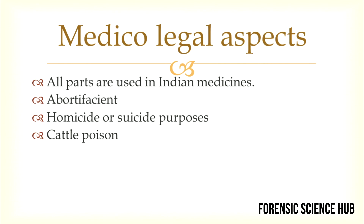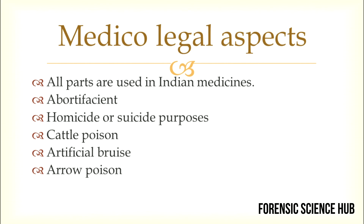The plant can be used as a cattle poison by mixing its powder with feed or by inserting a cloth soaked in its juice into the rectum of an animal. It can also be used to make artificial bruises on the skin, and is used as an arrow poison. The roots of Calotropis procera are highly poisonous to cobras — some poisonous snakes cannot even bear the smell of the roots. Hence, snake charmers use the roots of this plant to control cobras.